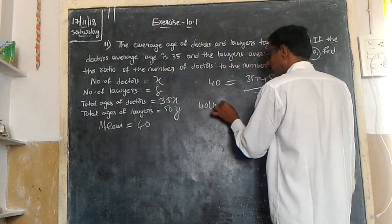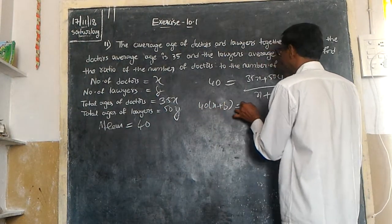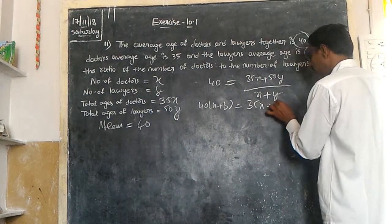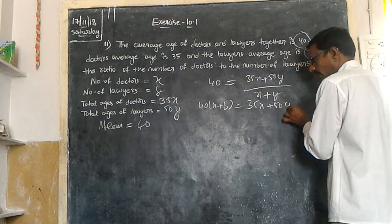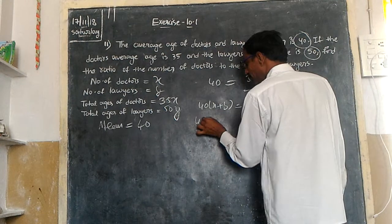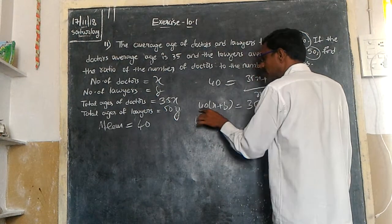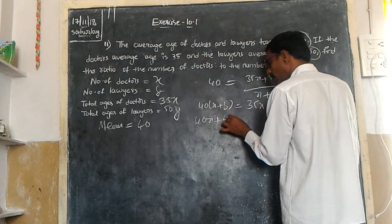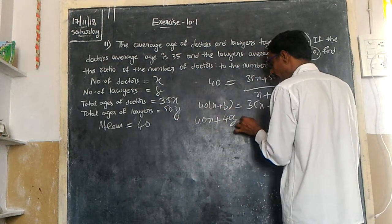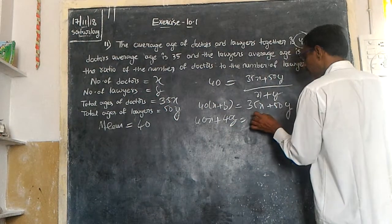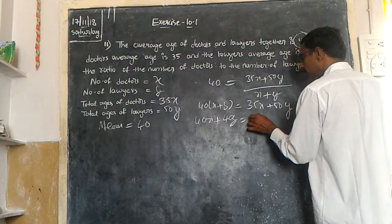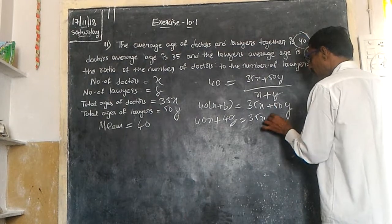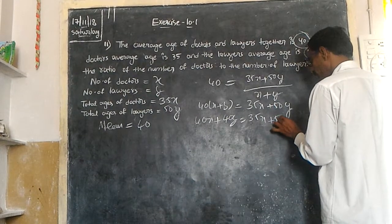So we get: 40 times (x plus y) is equal to 35x plus 50y. Expanding the left side: 40x plus 40y equals 35x plus 50y.